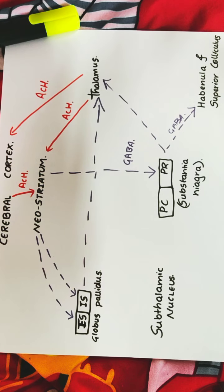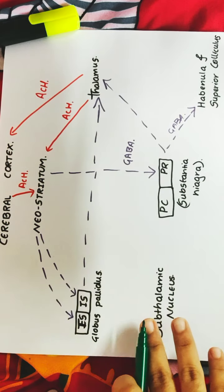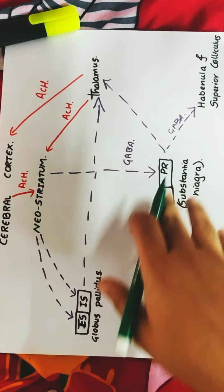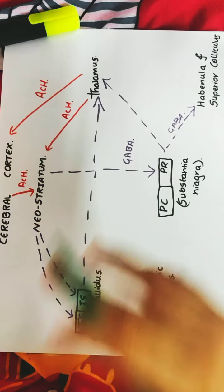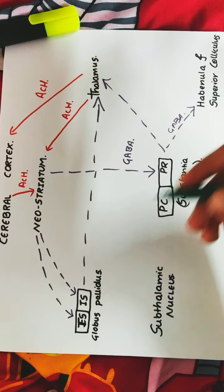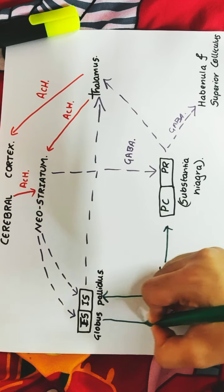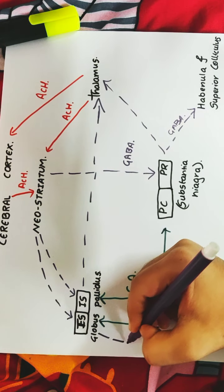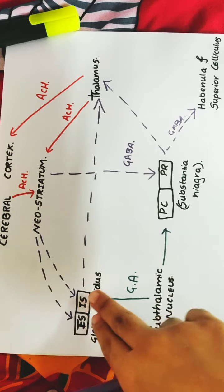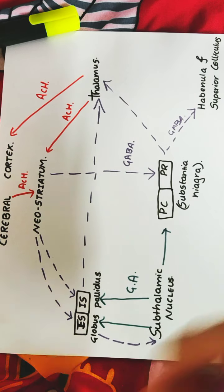Next is glutamic acid, an excitatory neurotransmitter. The subthalamic nucleus sends only excitatory signals to the globus pallidus (both external and internal segments) and to the substantia nigra via glutamic acid. Even though it receives inhibitory signals from the globus pallidus, the subthalamic nucleus still sends excitatory neurotransmitters to the globus pallidus and substantia nigra.